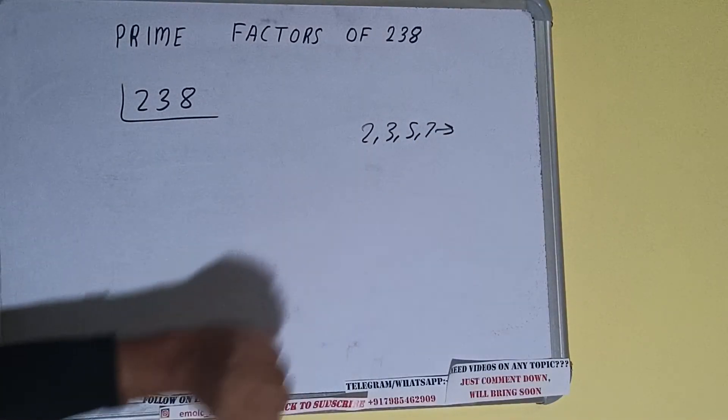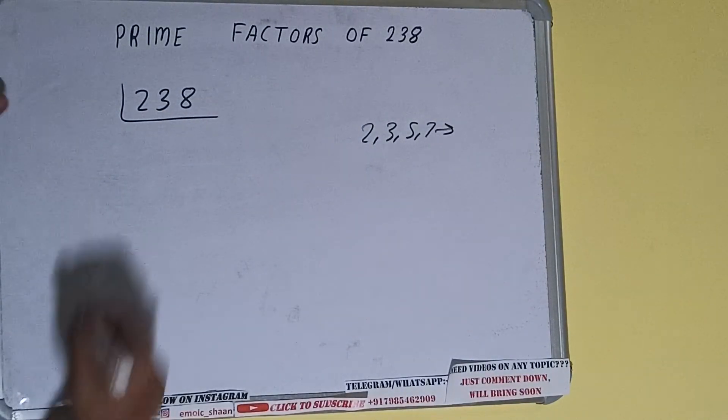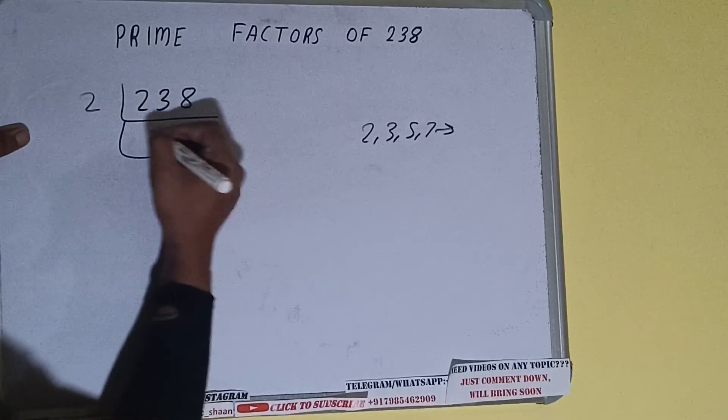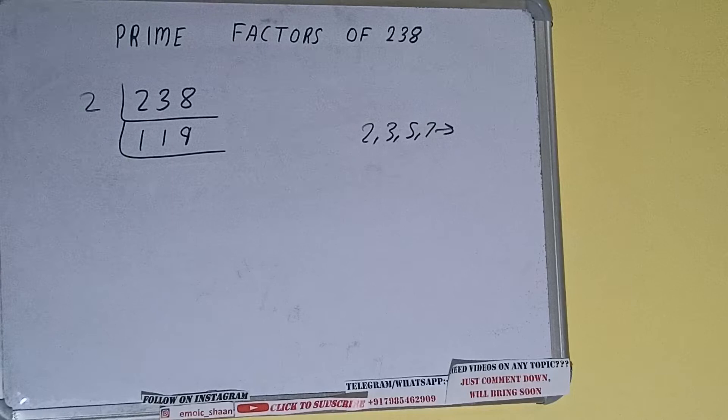We start with the lowest prime number, which is 2. Is 238 divisible by 2? Yes, it is because the number is even. We get 119. Is 119 further divisible by 2? The answer is no because the number is odd.